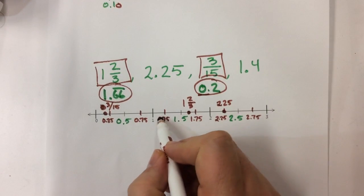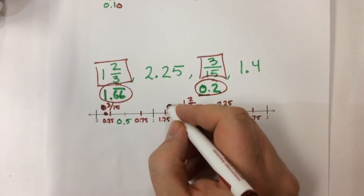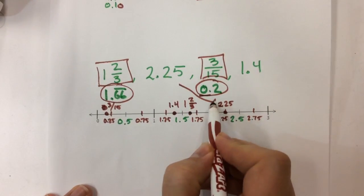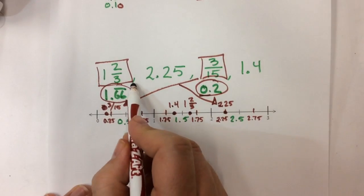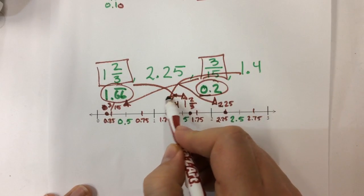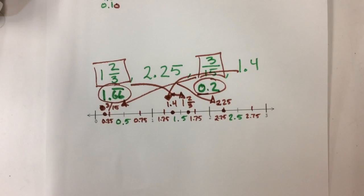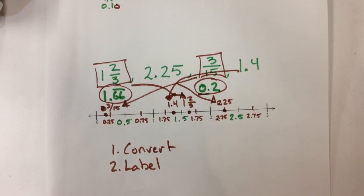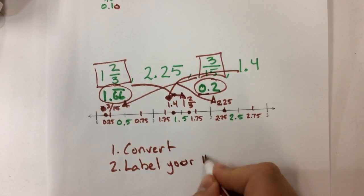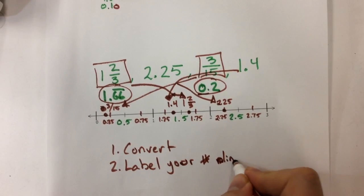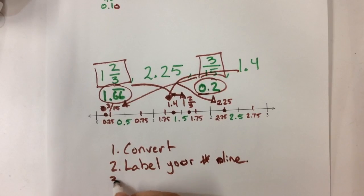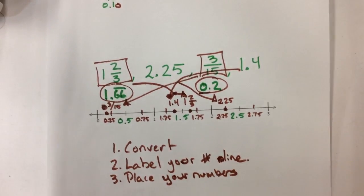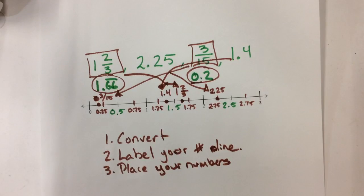Finally, 1 and 4 tenths. That's going to go between 1.25 and 1.5, probably right about there. You don't have to be exact, but you do have to be fairly precise. Each of these numbers goes on the number line in the place that it belongs. Remember: first convert, then label your number line, then place your numbers. If you can do those three things in that order, you have a very good chance of getting them all correct.